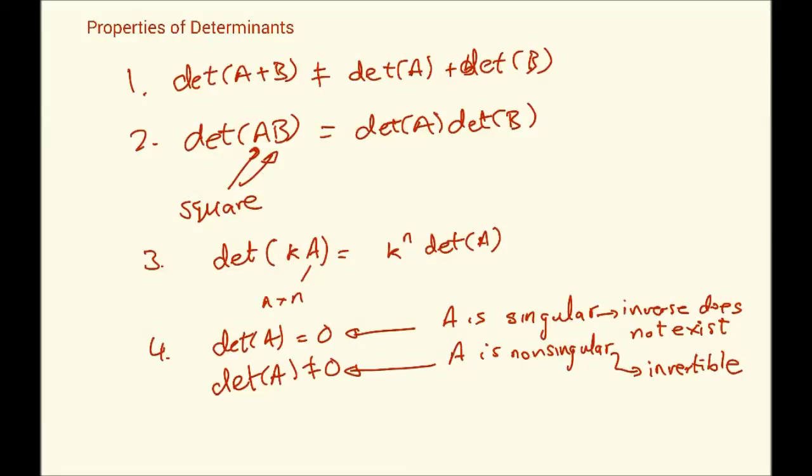By the way, I forgot to mention: A and B must be square and of the same size as well, because multiplication requires matrices of the same size. Please make a note of that.